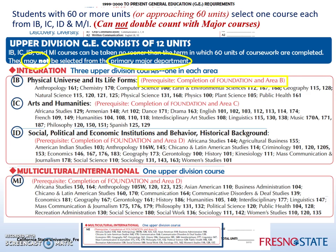In addition, within areas ID and MI, there are upper division writing courses — Anthropology 116W and Anthropology 105W, respectively — which satisfy the upper division writing requirement, a graduation requirement for all Fresno State students.